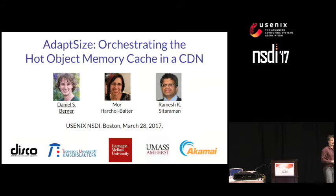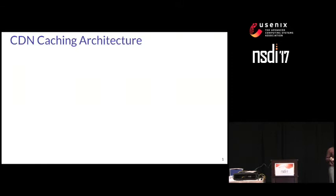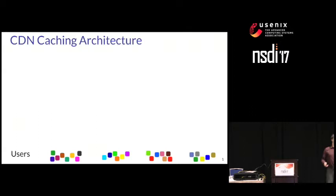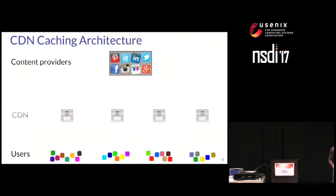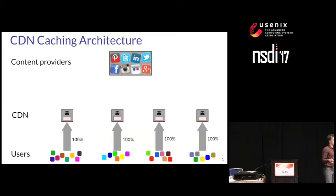As we're going to talk about a CDN, let's take a quick look at how a CDN might look like. We have our happy users at the bottom, and we have the content providers who have all the content we want at the top. The CDN is basically a layer in between — many, many caching servers that store, hopefully, the popular objects requested by users, and almost all of those requests are going to be satisfied by the CDN server.